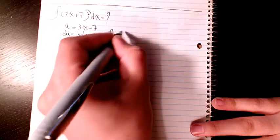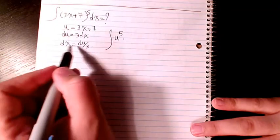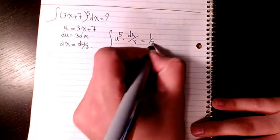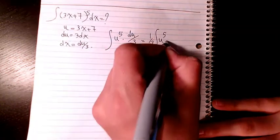So I'm going to have u to the power of 5. Instead of dx I have du divided by 3, so it's going to be 1 over 3 u to the power of 5 du.